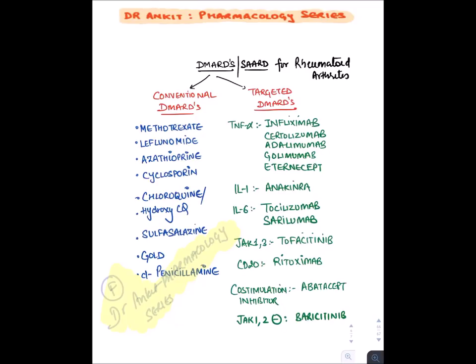Chloroquine and hydroxychloroquine are rarely used nowadays because they can lead to bull's eye maculopathy or bull's eye retinopathy. Then we have sulfasalazine, a prodrug with two active molecules: sulfapyridine, which is effective in rheumatoid arthritis, and 5-aminosalicylic acid, used in the treatment of ulcerative colitis. The older drugs gold and D-penicillamine are also DMARDs; D-penicillamine is a chelator. They are rarely used now because they are very toxic, causing diarrhea, dermatitis, and blood dyscrasias.